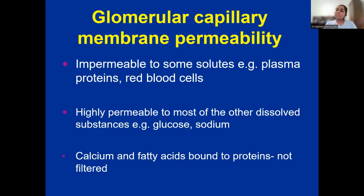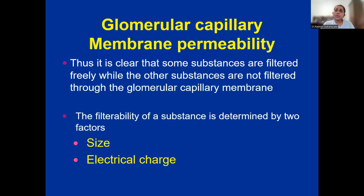Regarding glomerular capillary membrane permeability: it is impermeable to some solutes like plasma proteins and red blood cells — they cannot be filtered. It is highly permeable to most other dissolved substances like glucose and sodium. Calcium fatty acids bound to proteins are not filtered. Some substances are filtered freely, while others are not filtered freely through the glomerular capillary membrane.